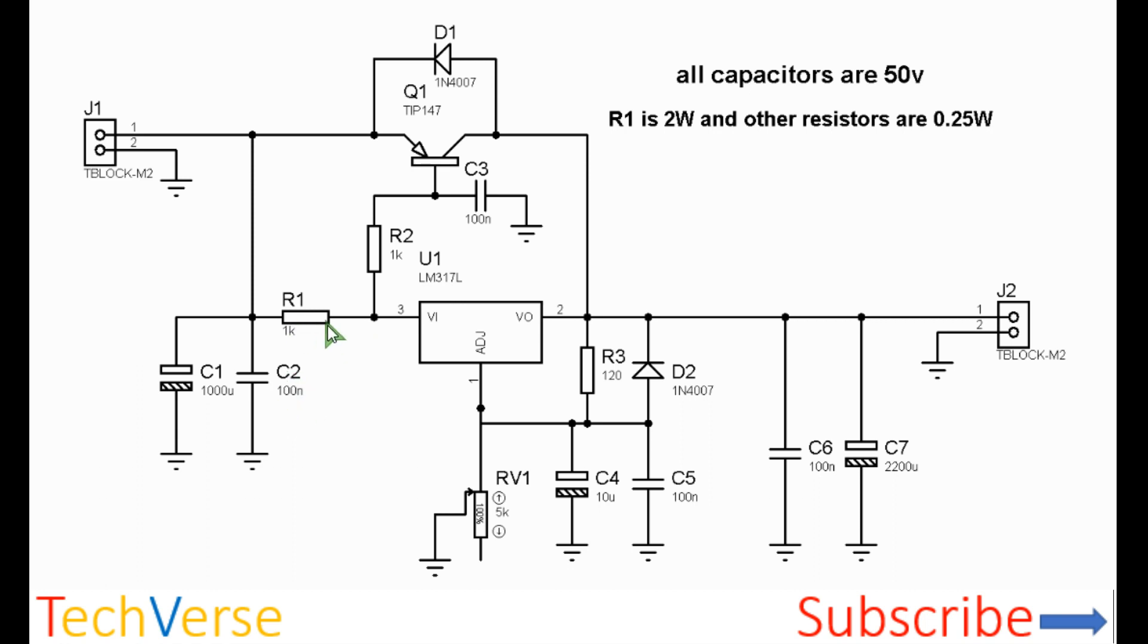When there is a load connected on the secondary side and current flows through R1, a voltage drop will be established across R1. When this voltage drop is sufficient enough to turn on the TIP147, it will begin conducting.